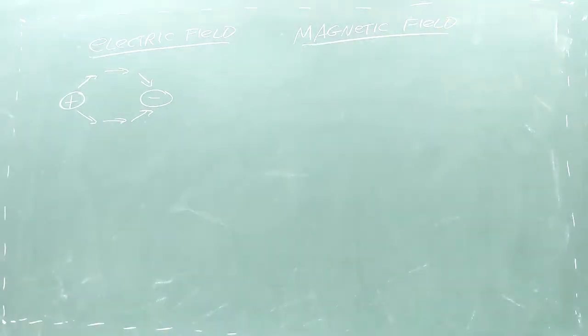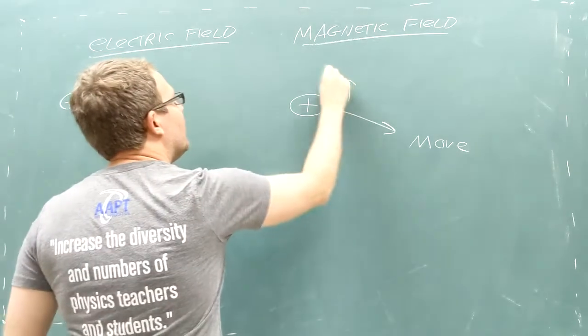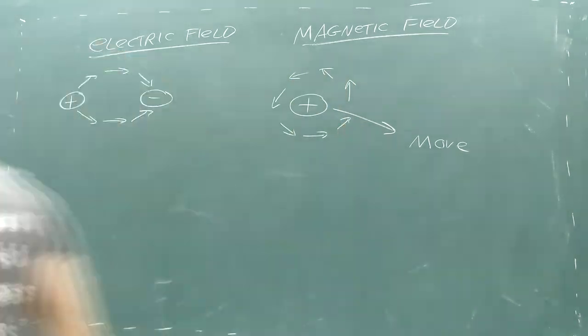Electric fields spread away from or into charged particles. Magnetic fields are rather different in that they circle around moving charged particles.